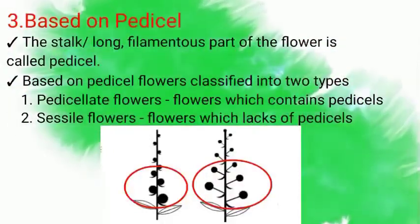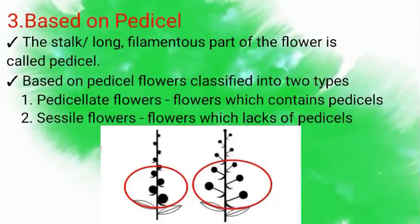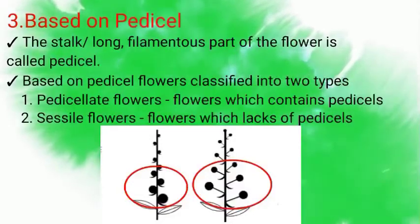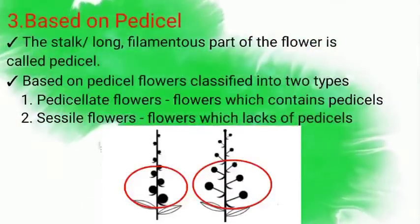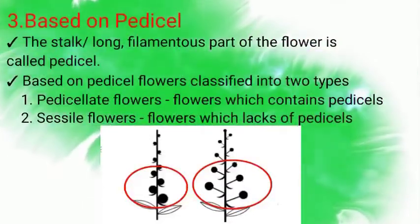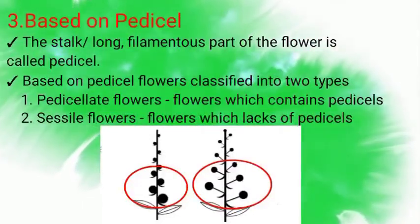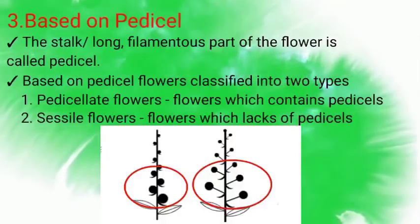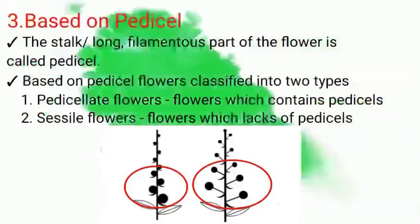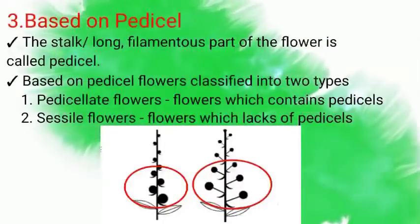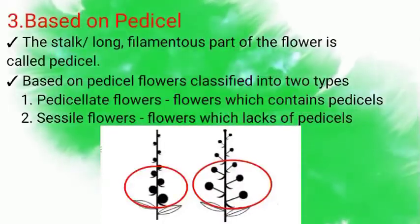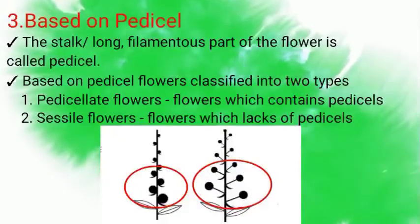See in the diagram — both Sessile Flowers and Pedicellate Flowers are shown. Pedicellate Flowers contain the stalk of the flower, or Pedicel. Sessile Flowers lack these Pedicels.